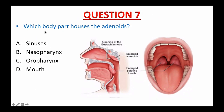Question number 7: Which body part houses the adenoids? A. Sinuses, B. Nasopharynx, C. Oropharynx, or D. Mouth. If you picked B — nasopharynx — you got it. The back wall of the nasopharynx is where the adenoids are positioned. The oropharynx is the middle portion of the pharynx at the back of the mouth, and this is where the tonsils are located.